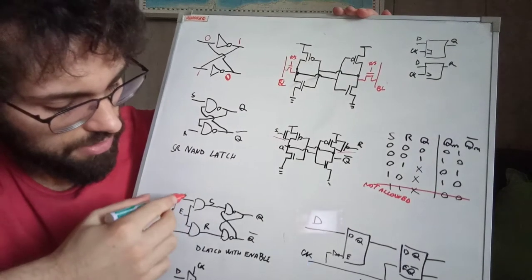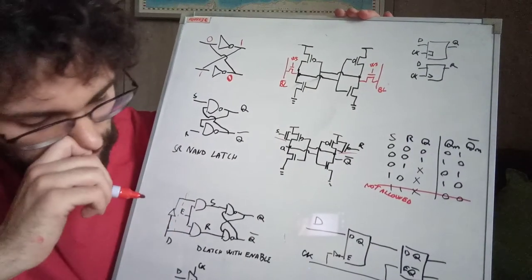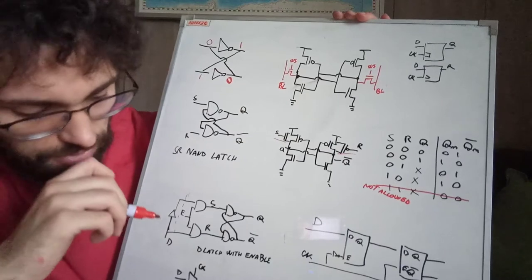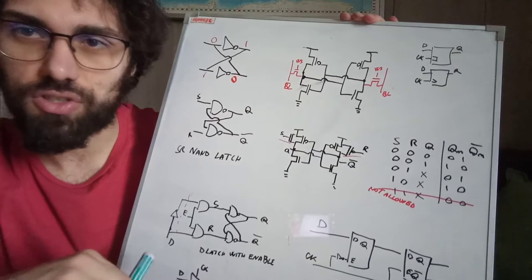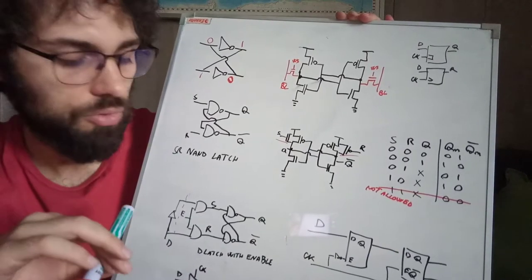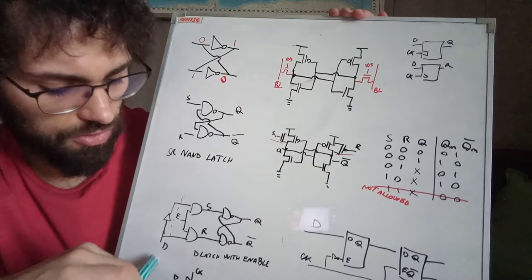So an improvement is to include an enable signal as shown here. Let's consider for now this part of the circuit. Another thing that we want sometimes is to propagate just whatever is at the input at the output without having those two signals.